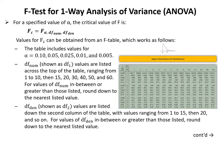For a specified value of alpha, the critical value F_c equals F at alpha, DF numerator, DF denominator. Values for F_c are obtained from an F table. The table includes values for alpha equal to 0.10, 0.05, 0.025, 0.01, and 0.005. DF numerator values are listed across the top ranging from 1 to 10, then 15, 20, 30, 40, 50, and 60. DF denominator values are listed down the column. For values in between or greater than those listed, round down to the nearest listed value.